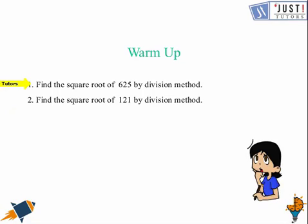So here we need to find the square root of 625 by division method. Since this method I am going to teach you in this video, here I am going to give you the answer which is 25, as 25 times 25 will give you 625. And here again we need to find the square root of 121 by division method. So the answer here is 11, as 11 times 11 will give you 121.